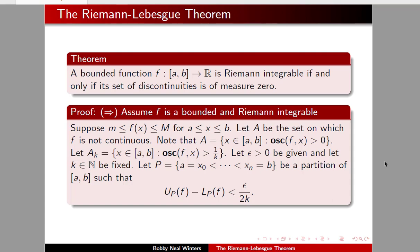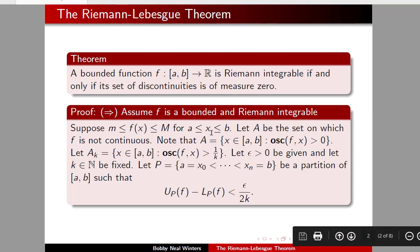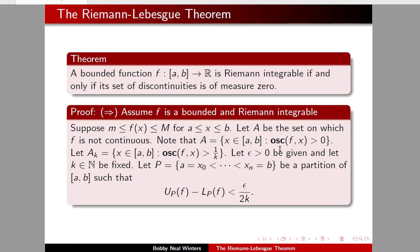Since it's an if and only if, let's begin with the assumption that f is bounded and Riemann-integrable. Let's suppose that it's bounded between little m and big M on this closed interval. And let's let A be the set on which it is not continuous — so we're going to prove that this set A is of measure zero.